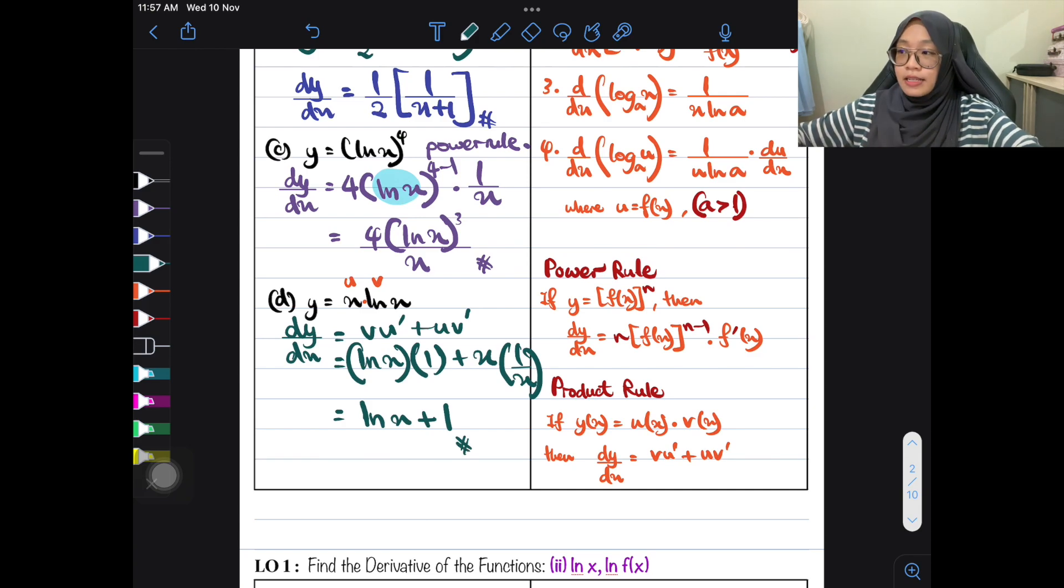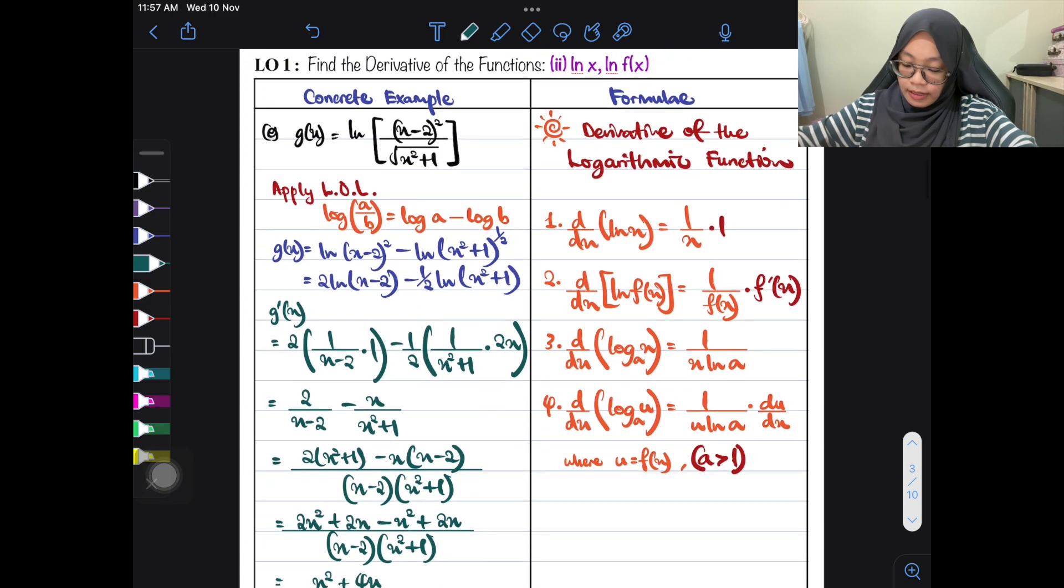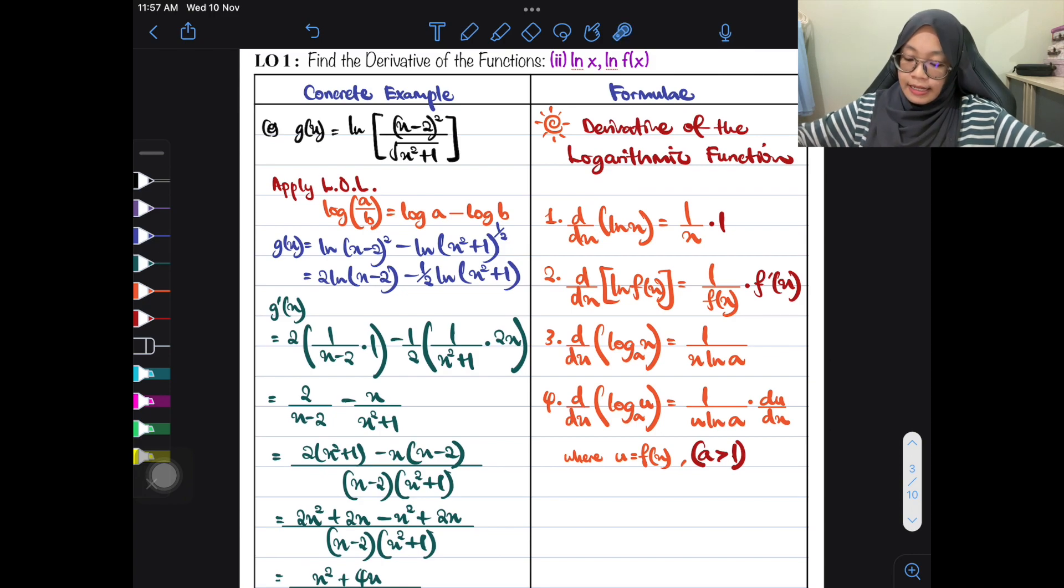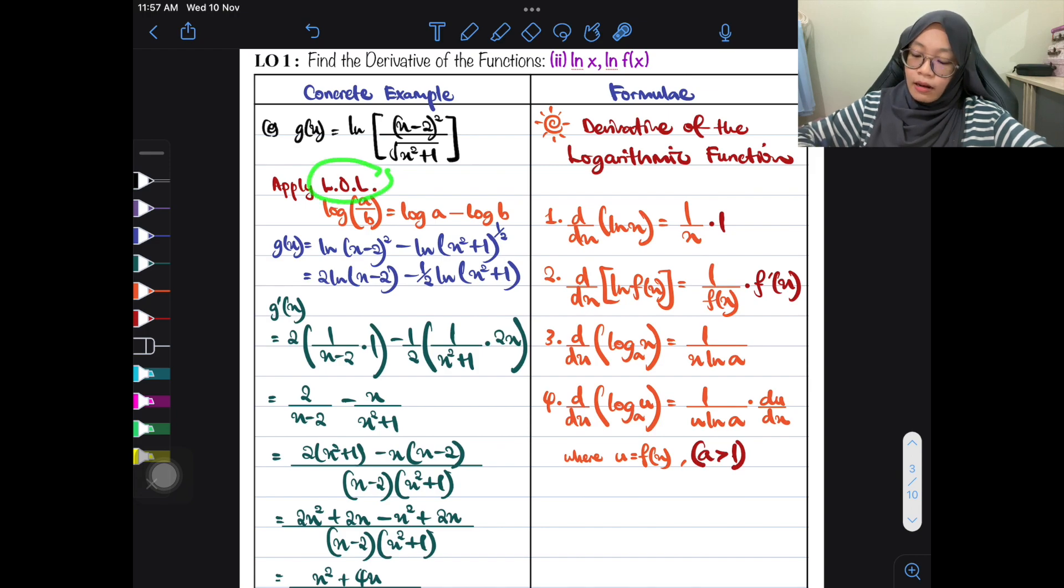And then, I solved it. I will get ln x plus 1. Just like that. Very easy peasy. So, now, example yang terakhir. Saya telah sediakan penulisan di sini. This is a bit harder. If you're trying to terus differentiate, terus cari g prime, memang honestly, it's very difficult. Tapi, kalau ada peluang untuk pakai LOL, untuk pakai law of logarithm, setiap kali ada peluang untuk pakai law of logarithm, tolonglah applykan dia dahulu. Just apply the law first.